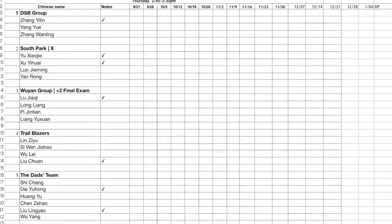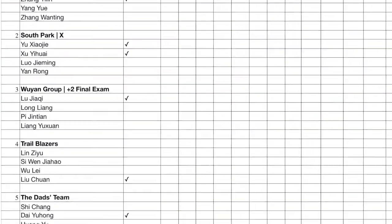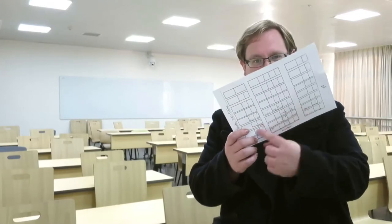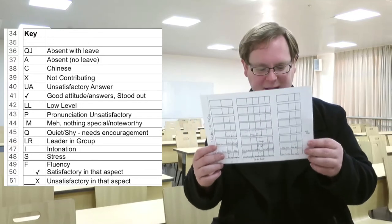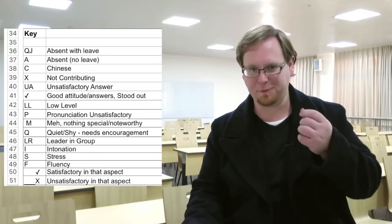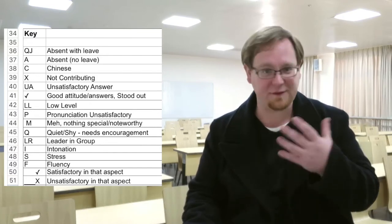I have an Excel spreadsheet with every student's name and I have different little codes for what students are doing every single week. I might put a check mark, an L if they come in late, a C if they're speaking Chinese, an A if they're absent, a P for pronunciation with a check or X to indicate good or bad pronunciation, an X if they're just not doing anything or not contributing, and an LR if they are a leader in their group that particular week. No matter what we're doing or who it is, this person in this chair gets this mark because of what they're doing.